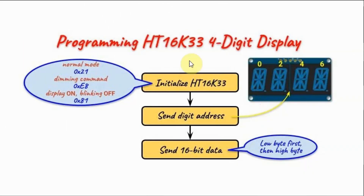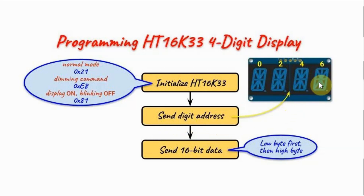Programming the four-digit display driven by the HT16K33 begins with initializing the IC by sending a command byte to put it in normal mode, then a dimming command, then a command to turn the display on with blinking off. After initialization, we send the address of the digit to display. The address of the first digit is 0 and the last is 6. Then we send the 16-bit character data — low byte first, then high byte.